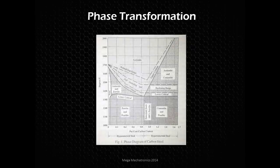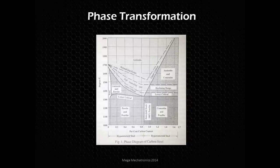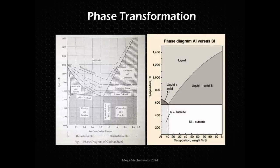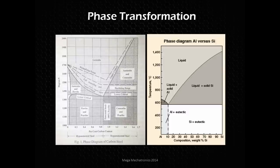Looking at phase transformation diagrams gives engineers an idea of where to start with temperature. This chart shows carbon content versus temperature for carbon steel, showing the different crystal structures achievable at different carbon contents and temperatures: austenite, ferrite, pearlite, cementite, and bainite with other post-heat treatments. Aluminum is different — its phase diagram shows temperature versus silicon composition, not carbon. Carbon is for hardening ferrous materials; silicon affects the hardness of aluminum, as do elements like copper depending on the aluminum alloy.